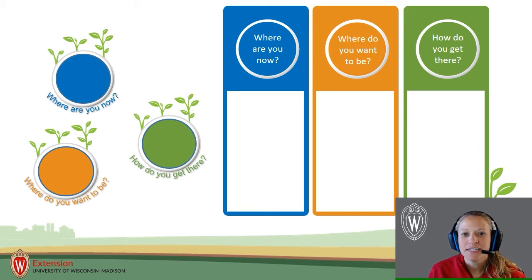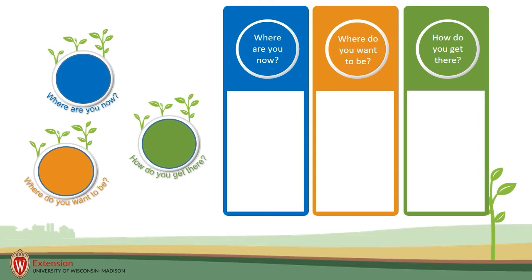Today we will be discussing the monthly and annual spending plan worksheets that are located in the first section of the workbook, Where Are You Now?, and found on pages 14 and 15. You are watching video two of two.